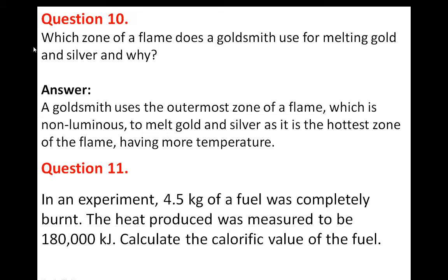Question 10: Which zone of flame does a goldsmith use for melting gold and silver? Melting metal requires high temperature. The outermost zone of a flame has the highest temperature. So a goldsmith uses the outermost, non-luminous zone of a flame to melt gold and silver, as it is the hottest zone.